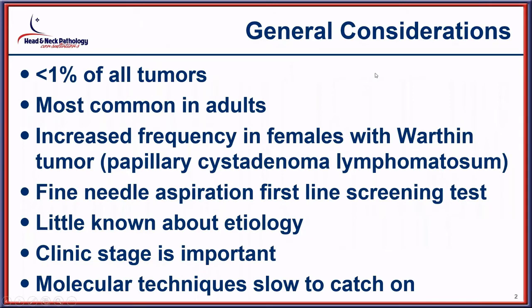If you think about general considerations for salivary gland pathology, it really is something quite uncommon — less than 1% of all tumors — so it isn't something you come across very frequently. They occur in adults, with increasing frequency as women have taken up smoking for Warthin tumor. Fine needle aspiration is definitely the first-line screening modality used in almost all head and neck lesions.